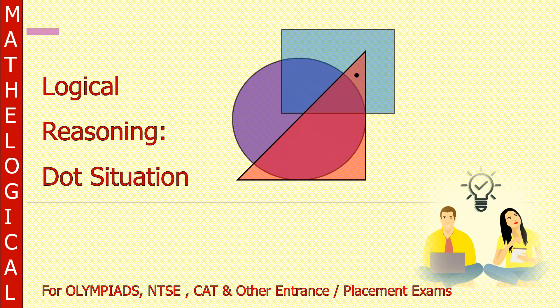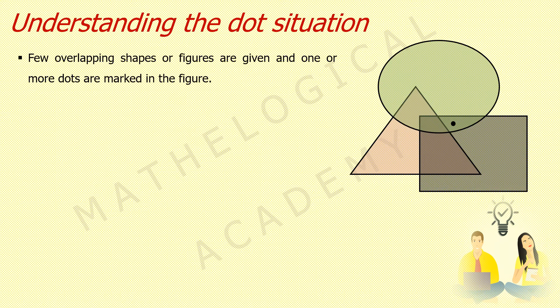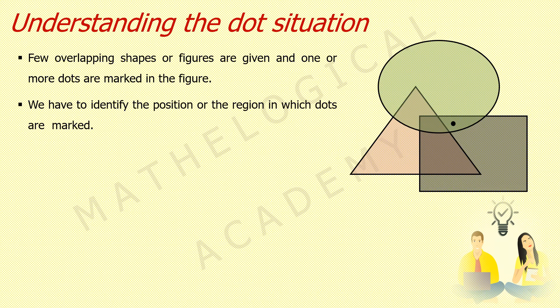Dot Situation. Understanding the dot situation: few overlapping shapes or figures are given and one or more dots are marked in the figure. We have to identify the position or the region in which the dots are marked.